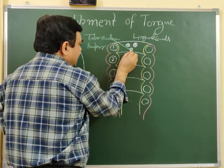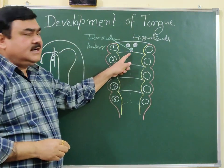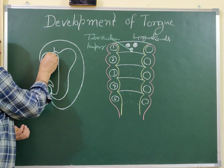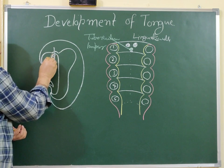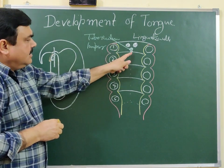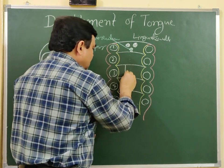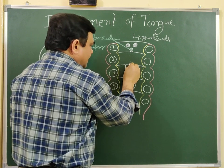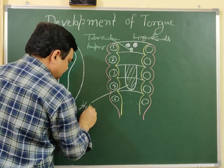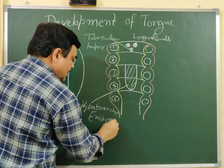Just behind this is the foramen cecum. From here, the thyroglossal duct passes downward and forms the thyroid gland. This opening is the opening of the thyroglossal duct. This is the hypobranchial eminence.